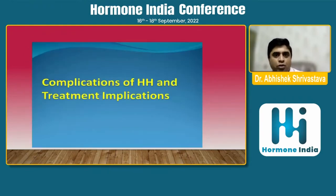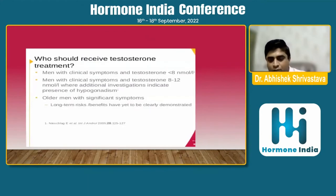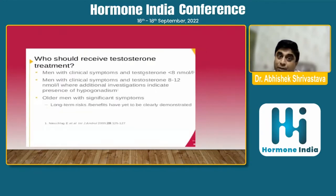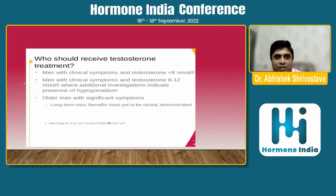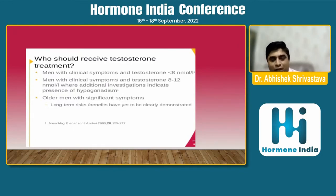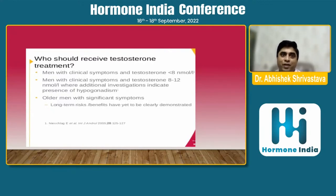Low testosterone levels are associated with a higher degree of development of cardiovascular diseases, neuropathy, and nephropathy. Regarding who should receive testosterone treatment: men with clinical symptoms and testosterone levels less than 8 nanomol per liter, and men with clinical symptoms and testosterone between 8 to 12 nanomol per liter where additional investigations indicate hypogonadism. In milligrams per deciliter, testosterone between 200–300 with clinical symptoms should receive treatment. If testosterone is less than 200 or 150 but without symptoms, supplementation can still be beneficial for type 2 diabetic patients.